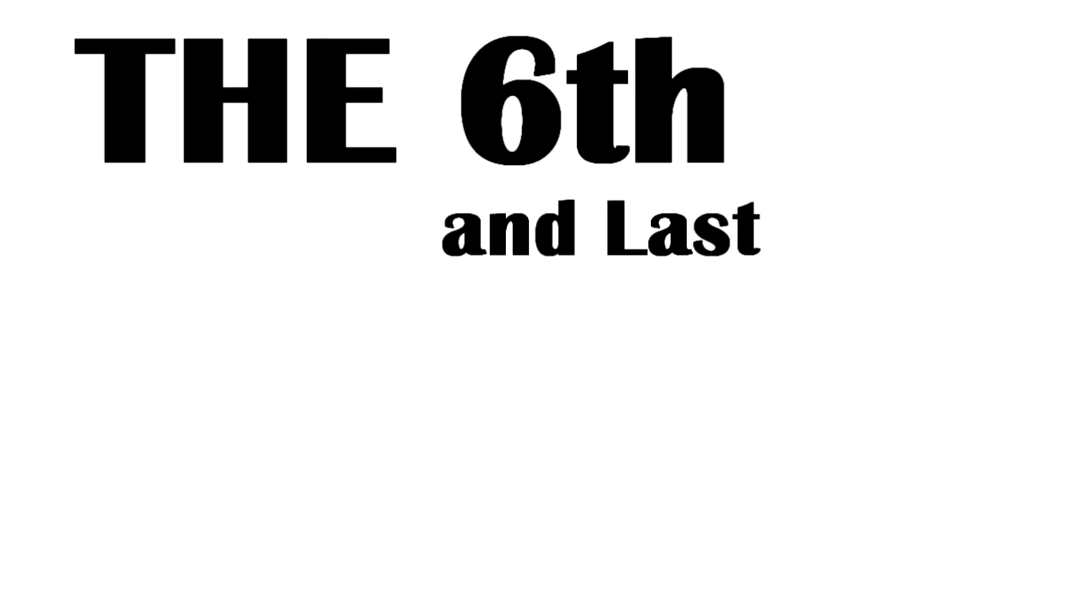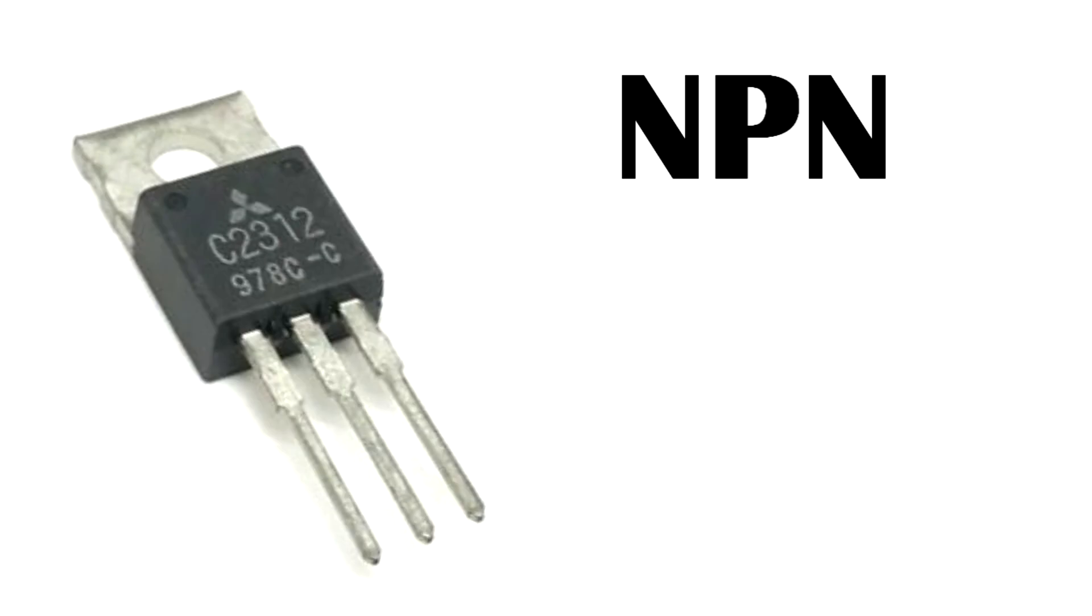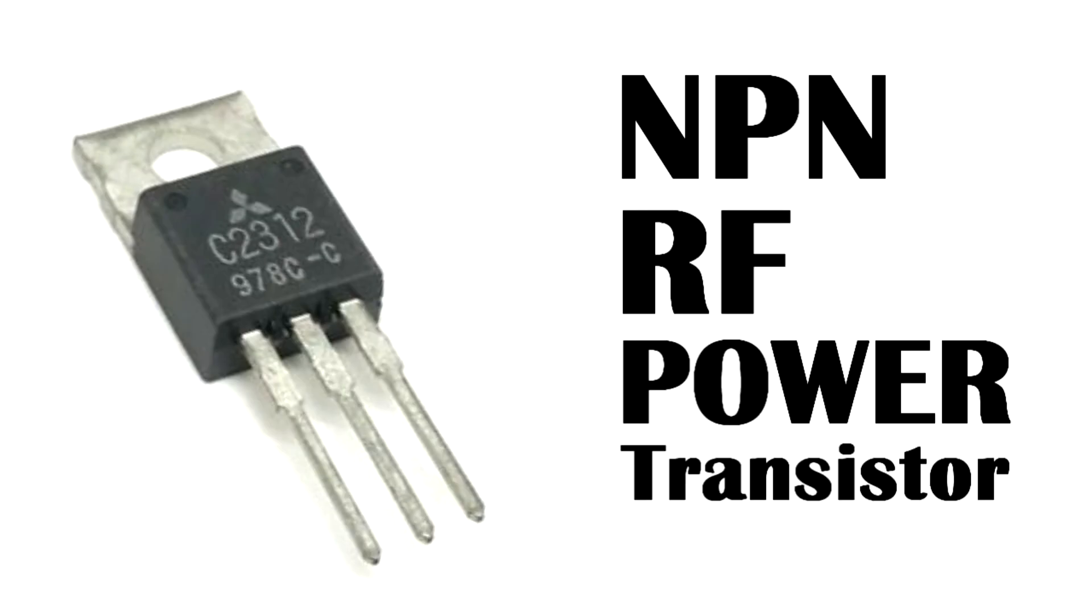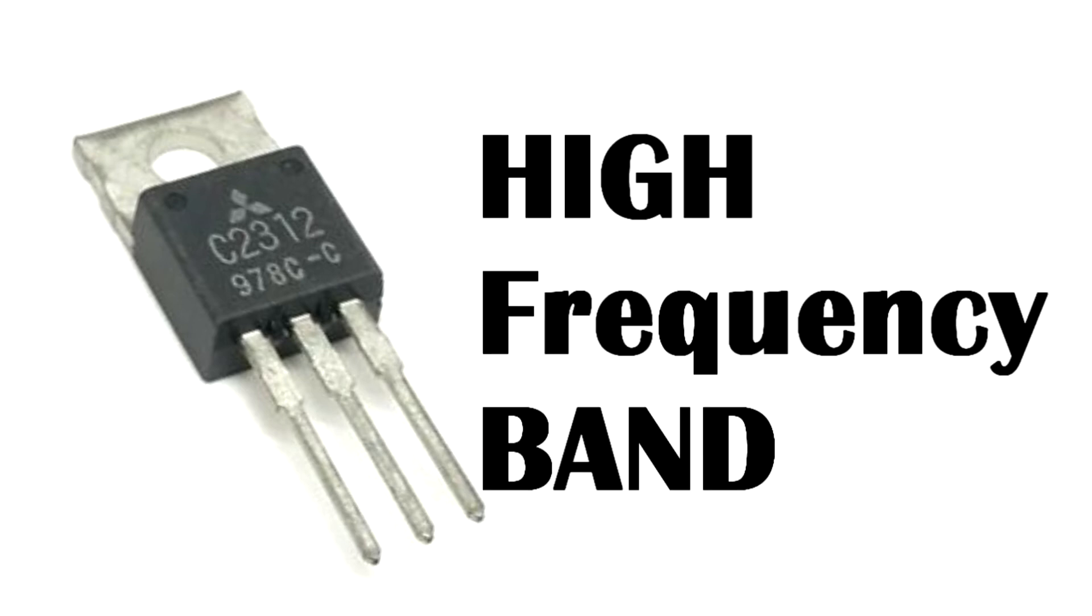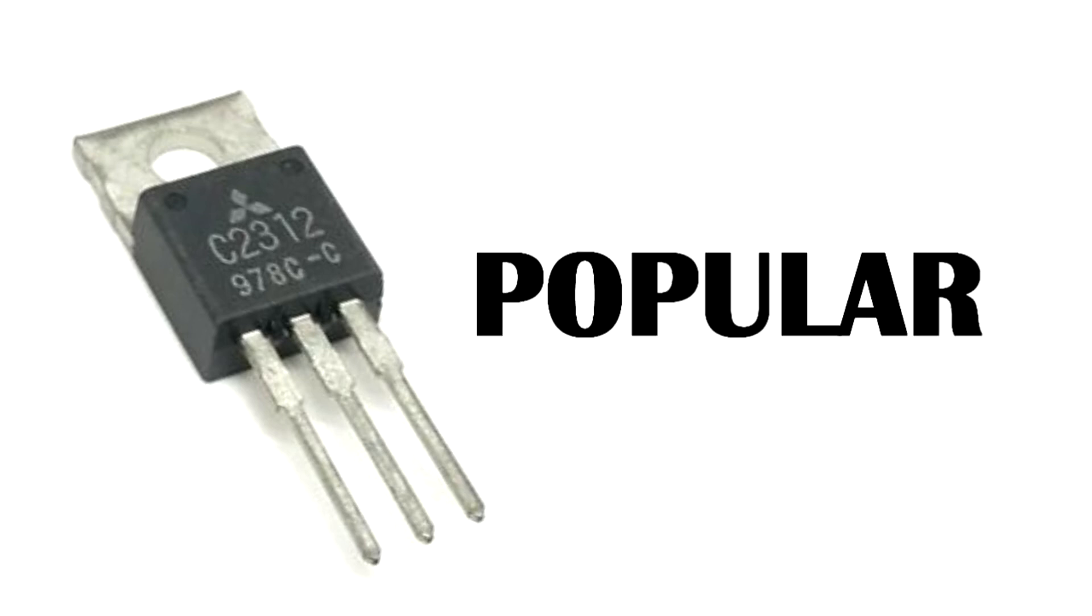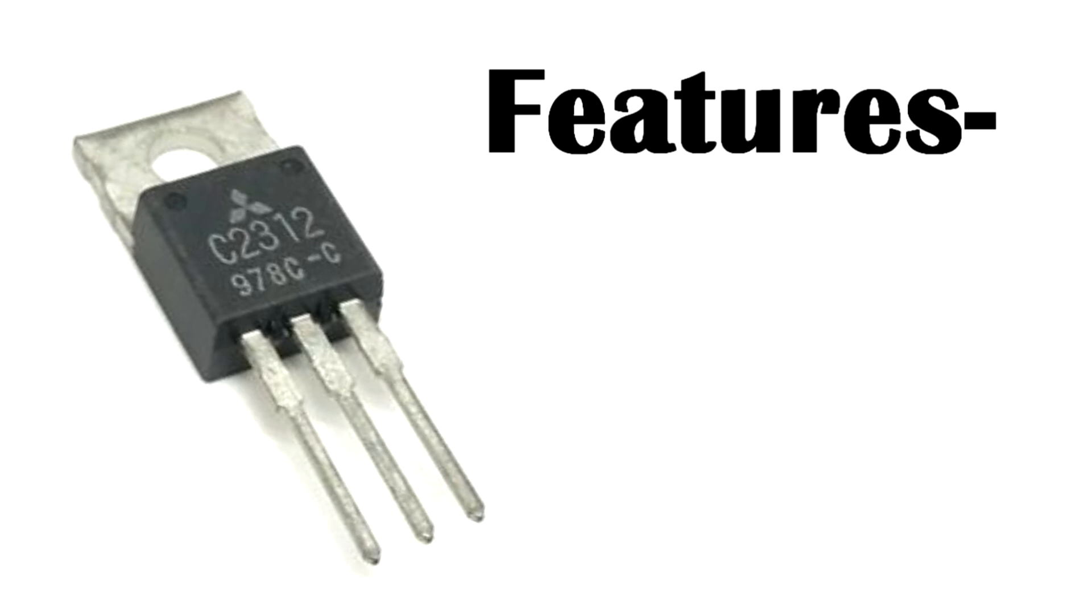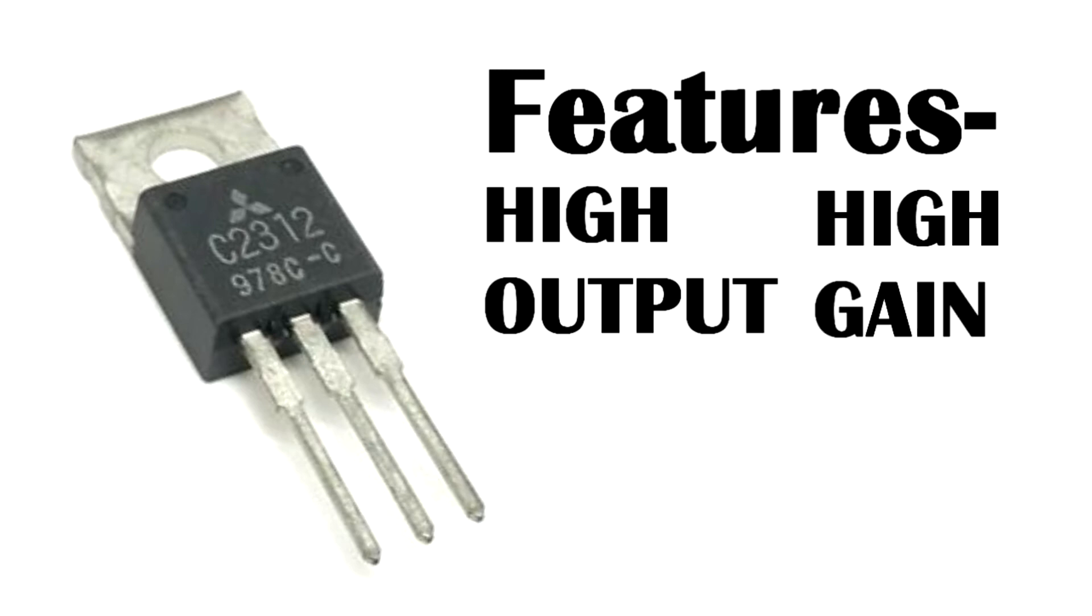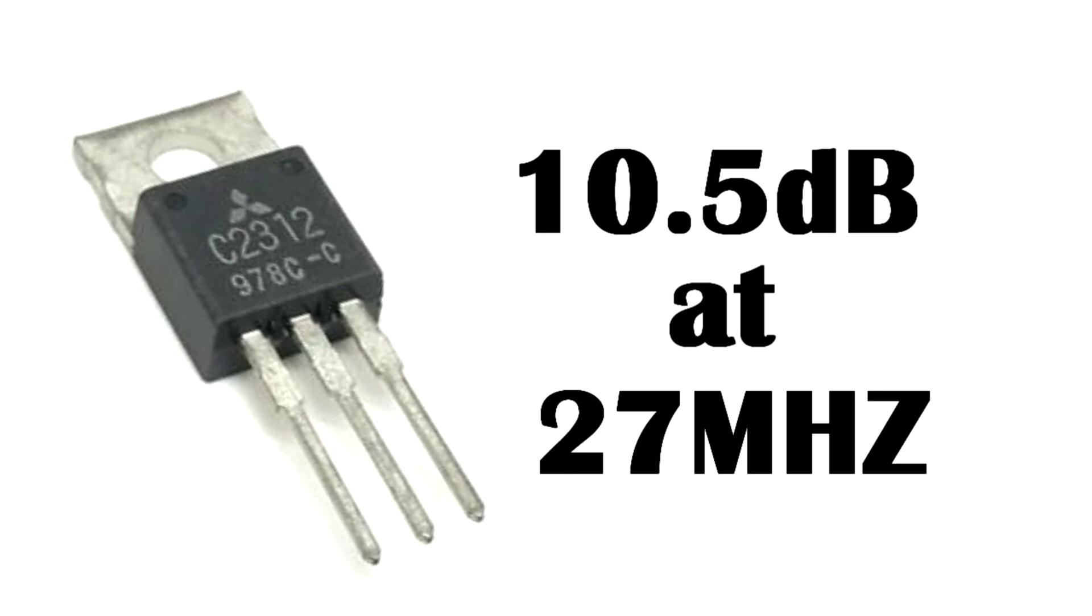The sixth and last transistor on my list is 2SC2312 which is an NPN RF power transistor specially designed for linear amplifier operating in high frequency band. It is a very popular RF transistor used in radios and CB radio amplifiers as it has features like high output and high gain, 10.5 dB at 27 MHz.